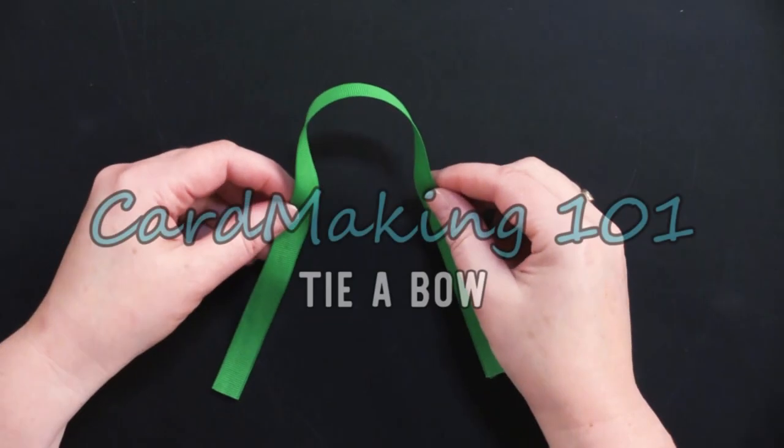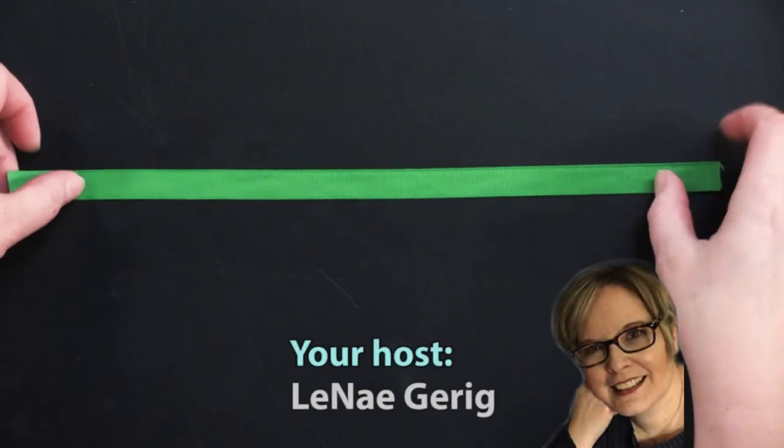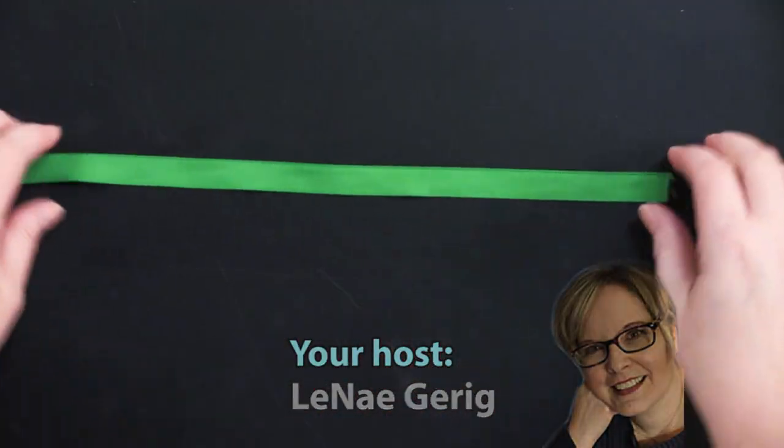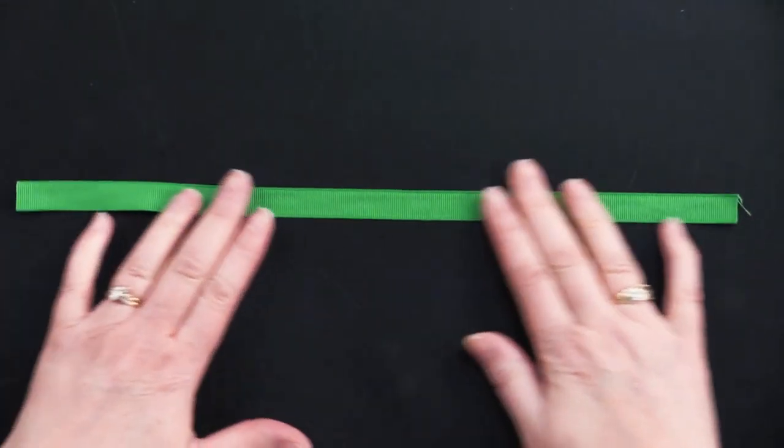This is your basic instruction for bow making 101. I am starting out with a 12 inch length of green grosgrain ribbon. It's 5 eighths inches wide and it is the same on both sides.